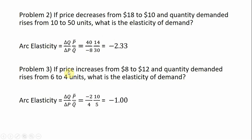Finally, in problem three, if price increases from $8 to $12, the change in P is plus 4, and quantity falls by 2, so the change in Q is minus 2. The average price is $10, and the average quantity — the midpoint between 6 and 4 — is 5. Simplifying, we get minus 1.